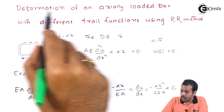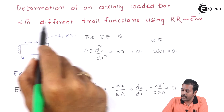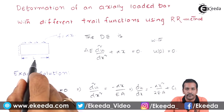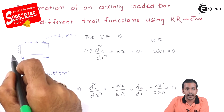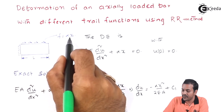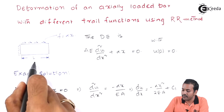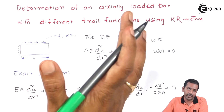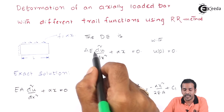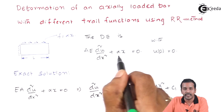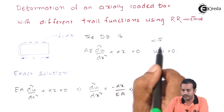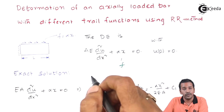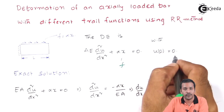Let us take a problem: deformation of an axially loaded bar with different trial functions using the Rayleigh-Ritz method. This is a simple bar where the left-hand side is completely fixed and we have a force f equal to alpha times x. The span of the bar is L. The differential equation for this bar is given as EA times d²u/dx² plus alpha x equals 0, with essential boundary condition u(0) = 0.